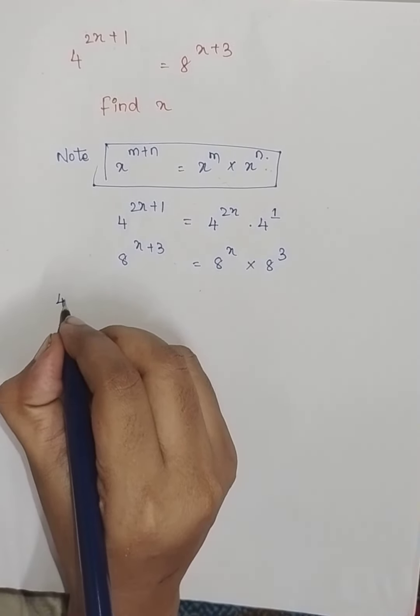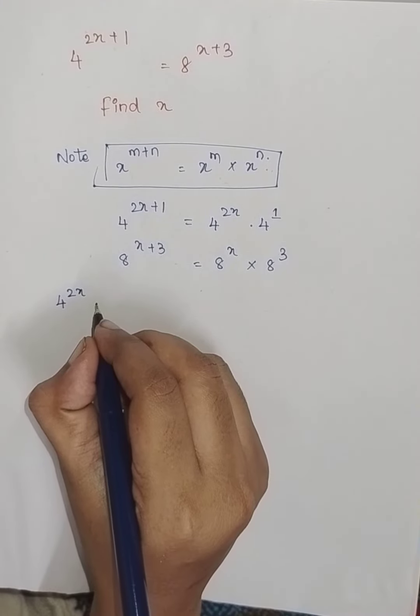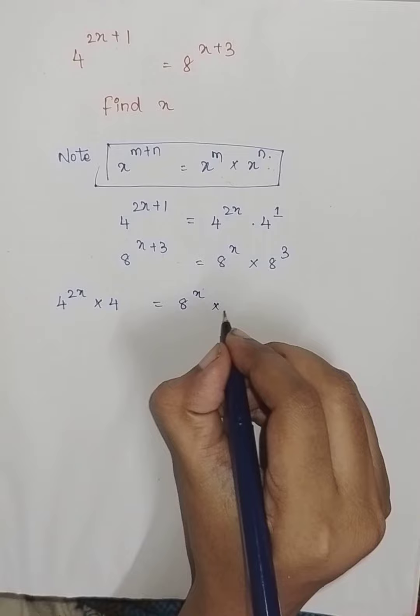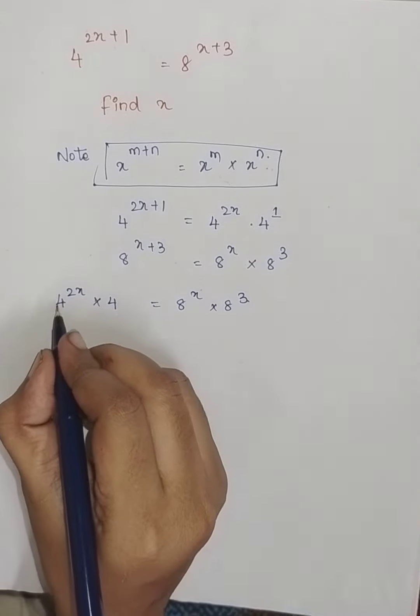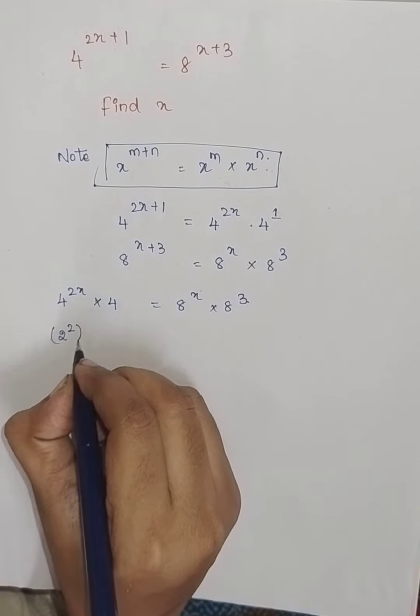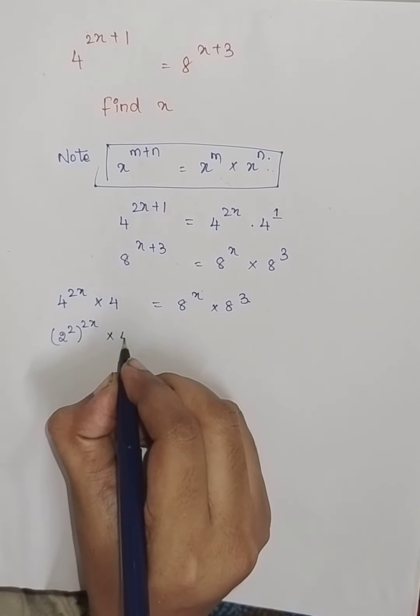And therefore, 4 power 2x into 4 which is equal to 8 power x into 8 power 3. So, this 4 will be written as 2 power square the whole power 2x into 4.